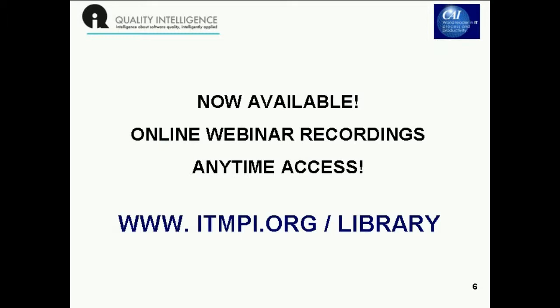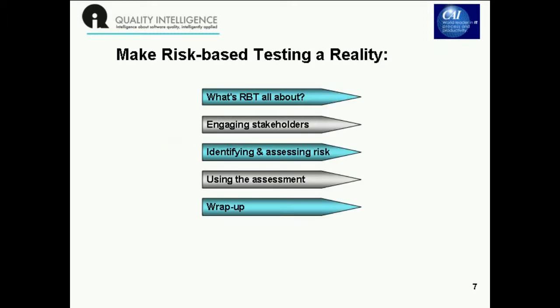Let's start by talking about what risk-based testing is about. First, a bit about what testing is about, since we don't all have the same idea. I think we can agree that a principal aim of testing is to give management information about the risks of implementing software. It's very important to balance the level of certainty we achieve through testing about software quality with the level that management wants.